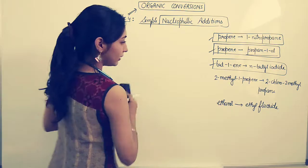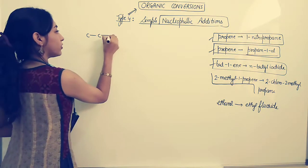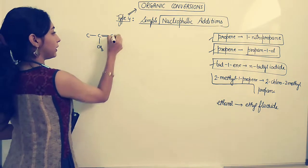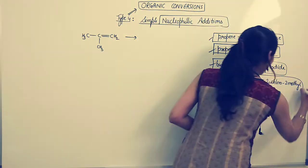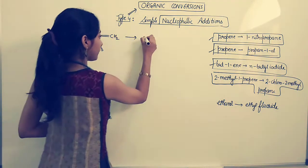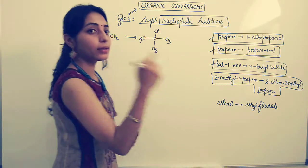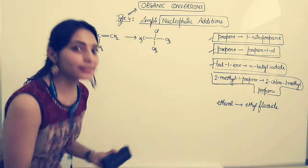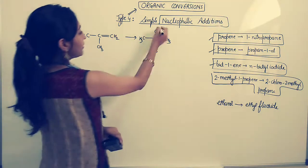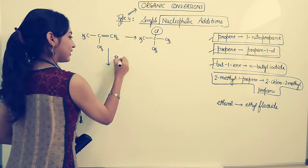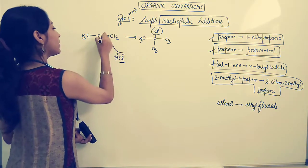Now the next question that I have is 2-methylpropene. Let me first draw propene and at second position I have methyl. And this has to be converted to 2-chloro-2-methylpropane. Question number 1: Is this belonging to the same type? Yes, because double bond is getting eliminated. Now, what do I want? I want Cl at the center.